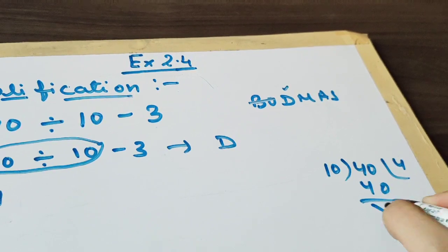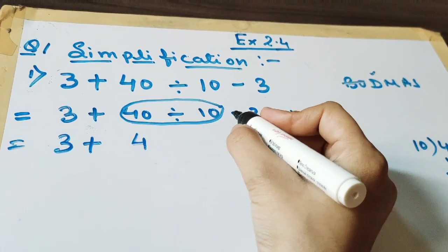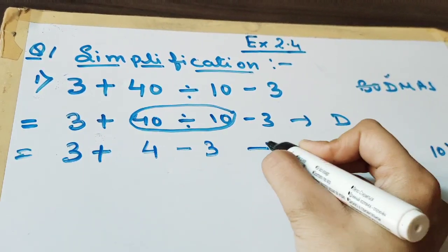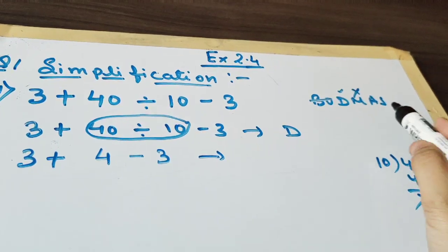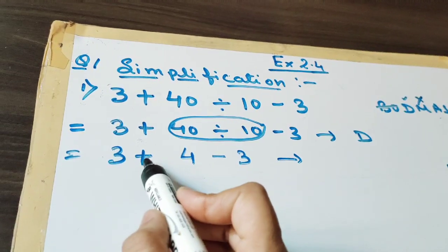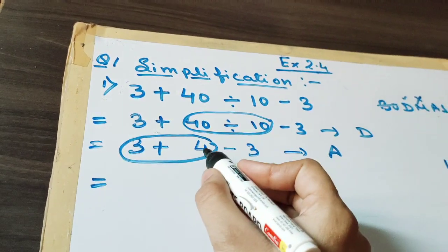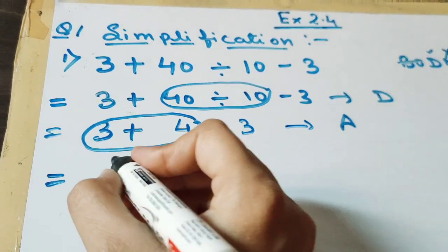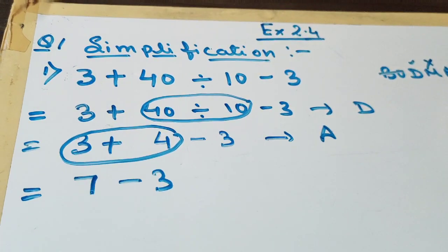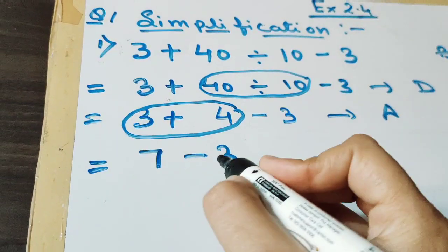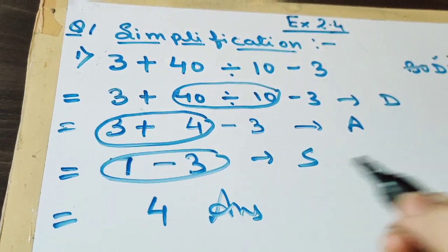After the division, minus 3 is still remaining. In this question there is no multiplication sign, so we don't have to multiply. Next is addition — both are positive, so we add: 3 plus 4 is 7. Then we write down minus 3. Last step is subtraction: 7 minus 3 is 4. We got the answer.